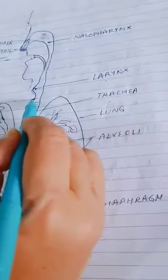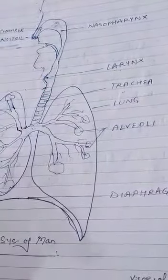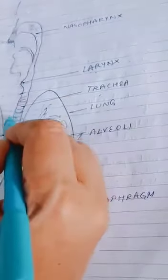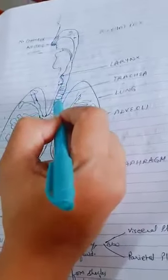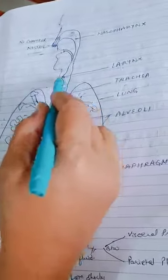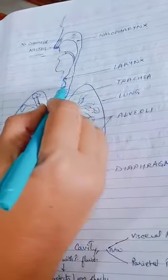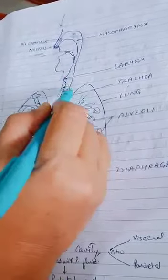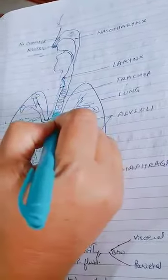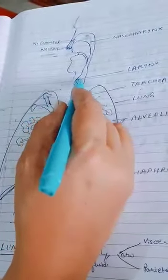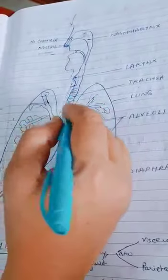The glottis always remains open to allow air into the trachea. However, it has a flap-like structure called the epiglottis, which closes temporarily whenever we swallow food, directing it to the food pipe. This prevents food particles from entering the windpipe. If food enters the trachea, a person can die. The epiglottis stops food from entering the windpipe; otherwise it stays open to allow air to pass inside.